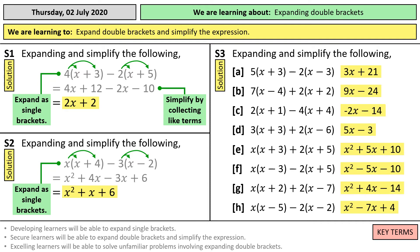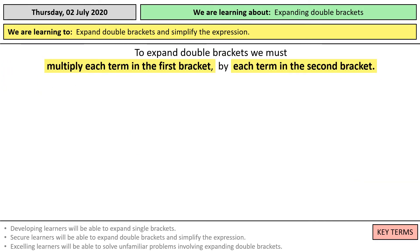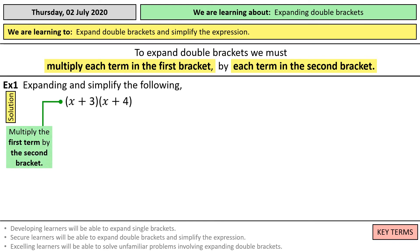Hopefully you did all right on those questions. We're going to go on to the main part of the lesson now, which is on expanding brackets. To expand double brackets, we must multiply each term in the first bracket by each term in the second bracket. So with example 1, we're going to multiply x plus 3 by x plus 4. We need to multiply the first term by the second bracket — so we're going to multiply everything in that second bracket, x plus 4, by x.